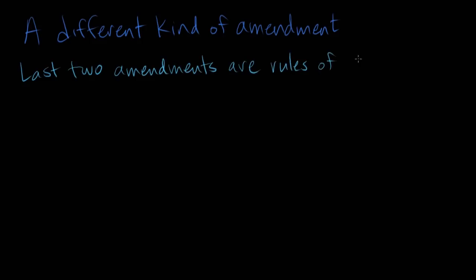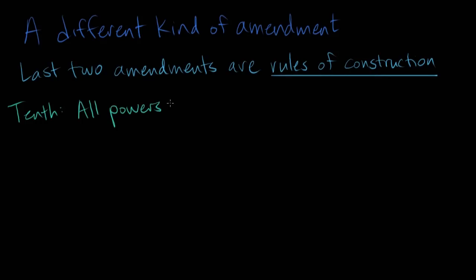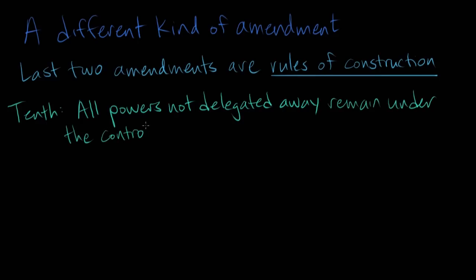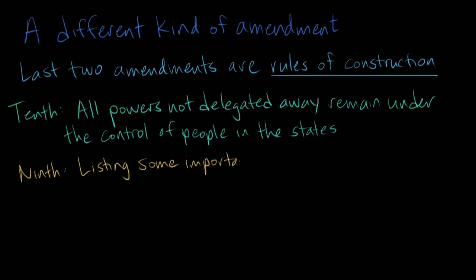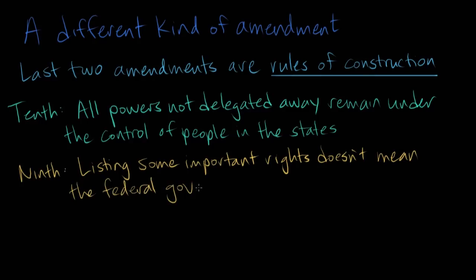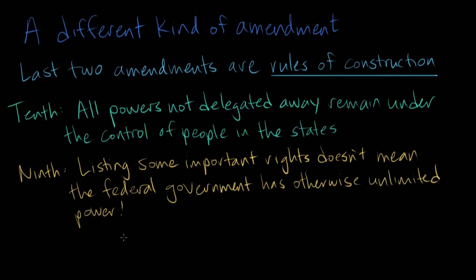These are rules of construction. The Tenth Amendment declares that all powers not delegated away remain under the control of the people and the states. The Ninth Amendment addresses the problem potentially raised by adding this list in a Bill of Rights. The Ninth Amendment tells us that just because the Constitution lists certain important limitations on federal power, this doesn't mean that the federal government has otherwise unlimited power — or, as the Ninth Amendment puts it, the enumeration in the Constitution of certain rights shall not be construed to deny or disparage others retained by the people. And in this way, those two last rules of construction ensure that every subject not placed under the control of the national government would remain under the control of the people in the states as a matter of right. These amendments protect the people's retained right to local self-government.